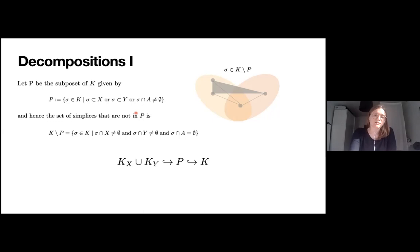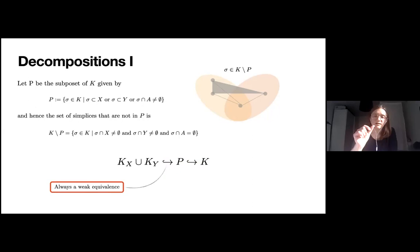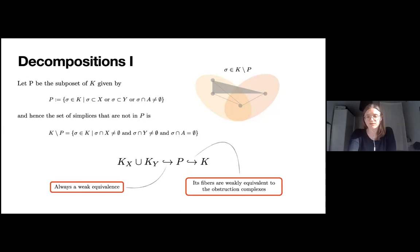The definition of P also allows us to split the inclusion of the data-driven decomposition of K into K into two maps. Note that they are not maps of simplicial complexes, because in general P is not a simplicial complex. However, P is a sub-poset of K, so these two maps can be seen as functors between poset categories. It can be shown that the first map is always a weak equivalence, so to study their composition we just need to focus on the second map, which has categorical fibers that are weakly equivalent to the obstruction complexes.